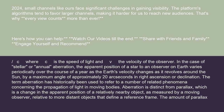In the case of stellar or annual aberration, the apparent position of a star to an observer on Earth varies periodically over the course of a year as the Earth's velocity changes as it revolves around the Sun, by a maximum angle of approximately 20 arc seconds in right ascension or declination.